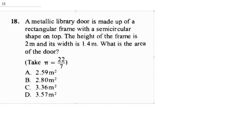Question 18 says: a metallic library door is made up of a rectangular frame with a semicircular shape on top. The height of the frame is 2 meters and its width is 1.4 meters. What is the area of the door?